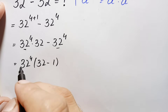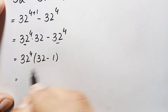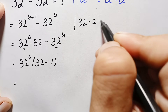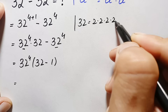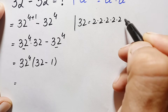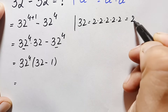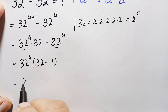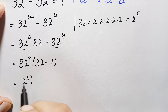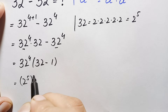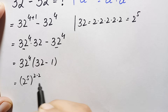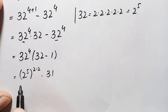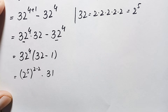Next, we can write 32 as a power of 2: 2 times 2 is 4, times 2 is 8, times 2 is 16, times 2 is 32 — so 32 equals 2 raised to power 5. We replace this 32 with 2 raised to power 5, so 32 raised to power 4 becomes 2 raised to power 5, and we can write the power as 2 times 2, which gives us 31 times this expression.